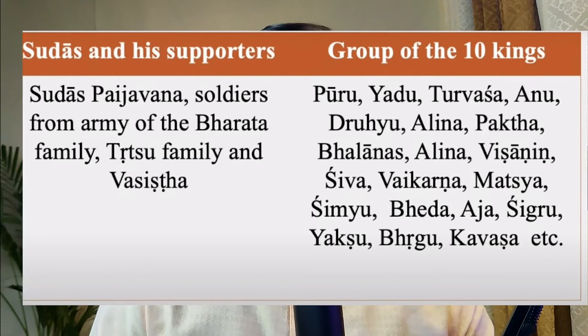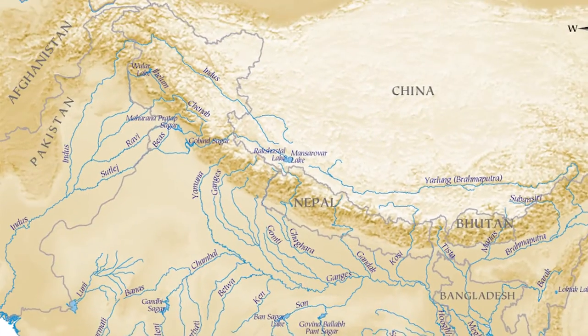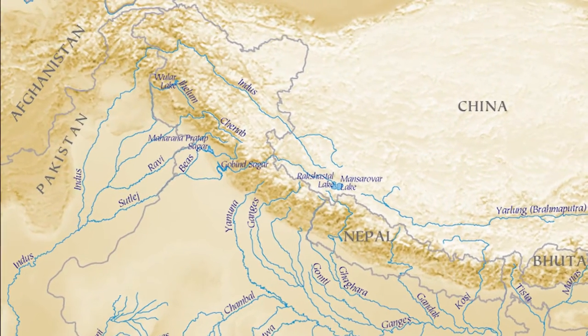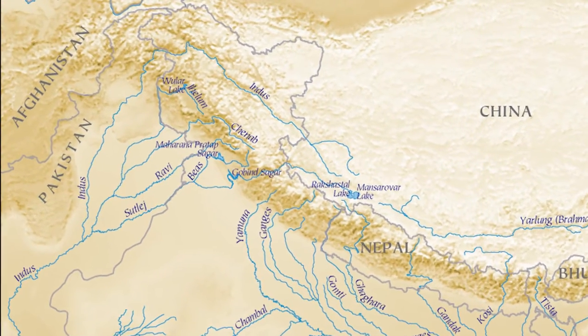After the Battle of Harupriya, the Bharatas expanded their territories towards the west under the guidance of Vishwamitra. They crossed the rivers Vipas and Satudri — today's Beas and Sutlej. But they didn't have to fight any battles because King Sudhas performed the Ashwameg Yagya.